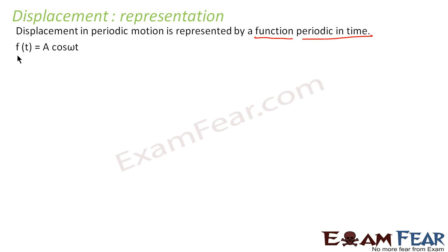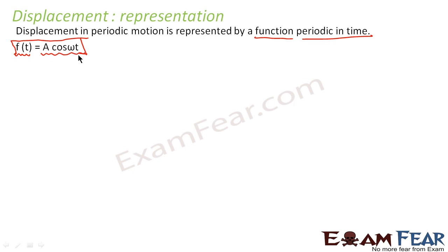This is how we represent displacement — denoted by f(t), that is a function dependent on time t, equal to A cos(ωt). This is just a general equation which tells how we represent displacement of an oscillating particle. A, ω, and t will all be discussed as we go ahead.